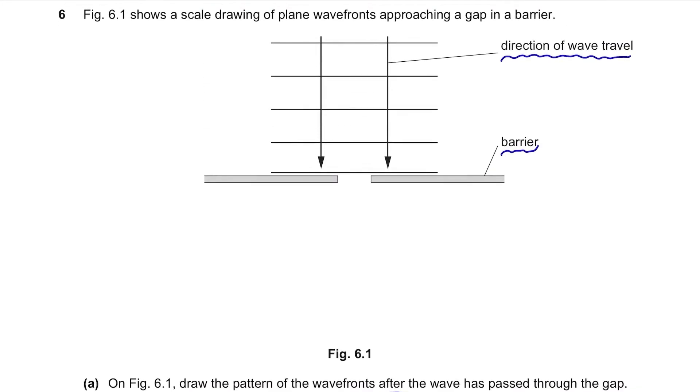This is an example of diffraction of waves, so the shape will be a semicircle like this. Draw 3 or 4. Also, the wavelength of the wavefronts should be the same as the original wavelength because there will be no change in its frequency. Not too narrow or too wide compared to the initial wave.